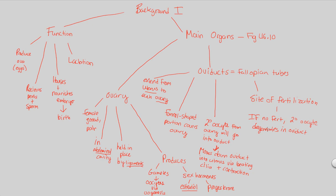That covers our first look at the main organs of the female reproductive system. We'll conclude our look at the organs in the next video. Make sure to always go back to the functions and see how each organ relates back to those functions in some way.